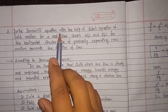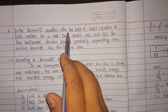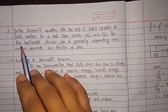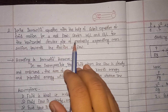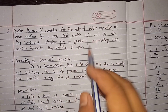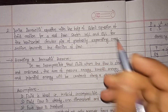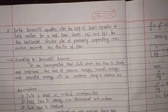Define Bernoulli's equation with the help of Euler's equation of motion for real flow. This is 4 marks. This is the HGL and EGL for the horizontal circular pipe of gradually expanding cross-section towards the direction of the flow. This is 4 marks. This equation is used to apply Bernoulli's theorem. This is the graph. This is 8 marks.